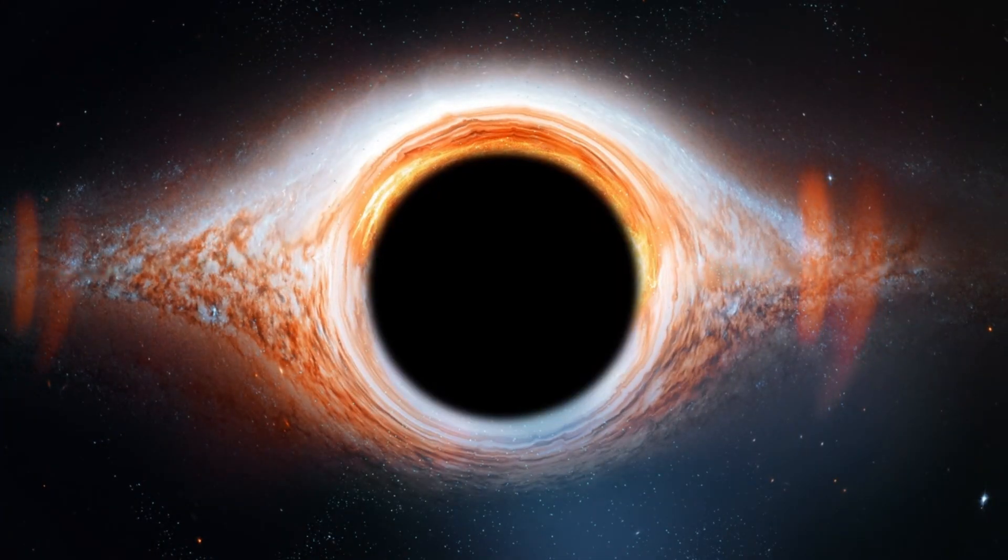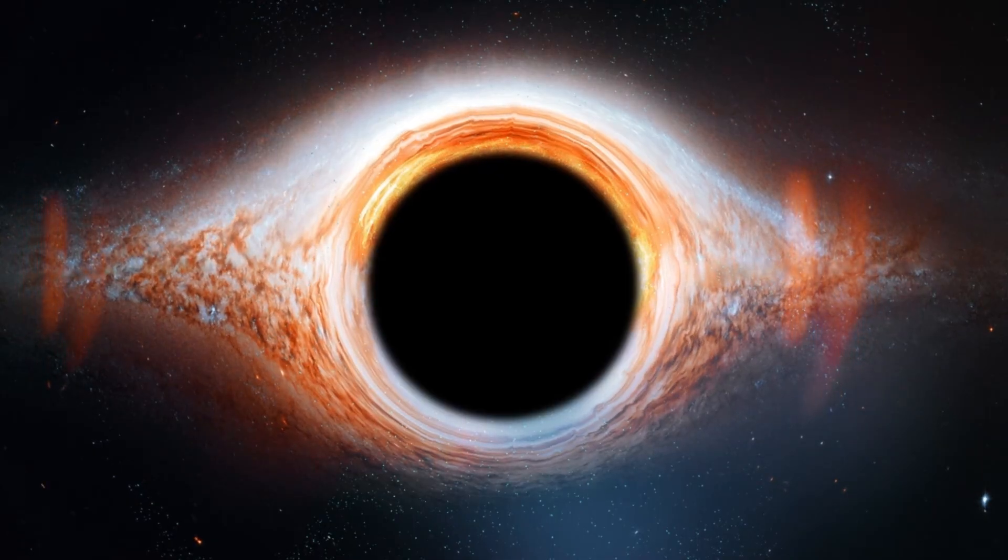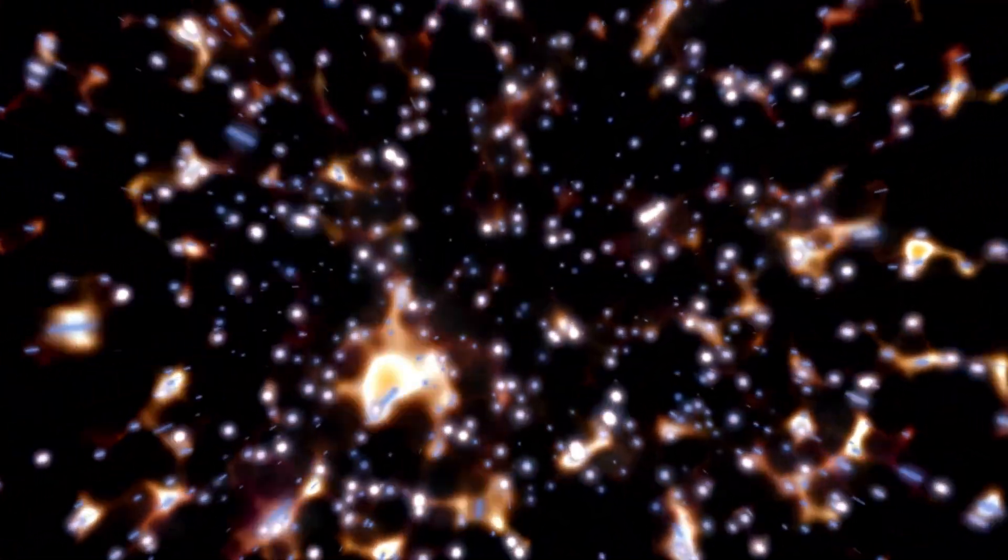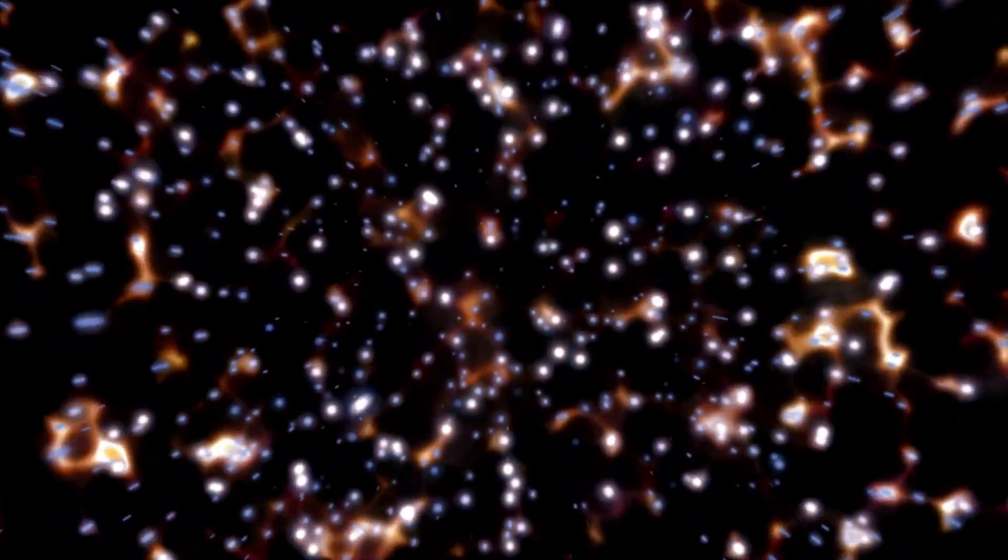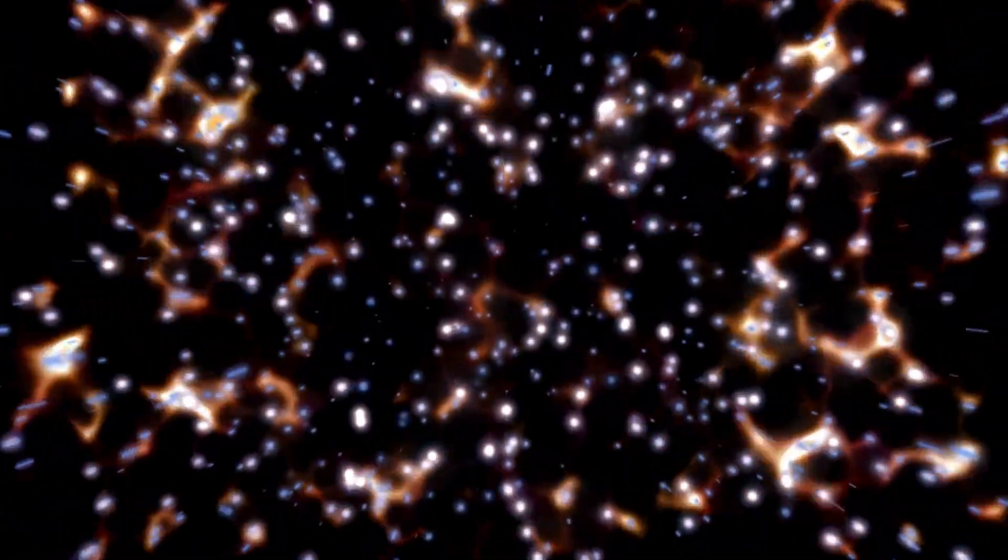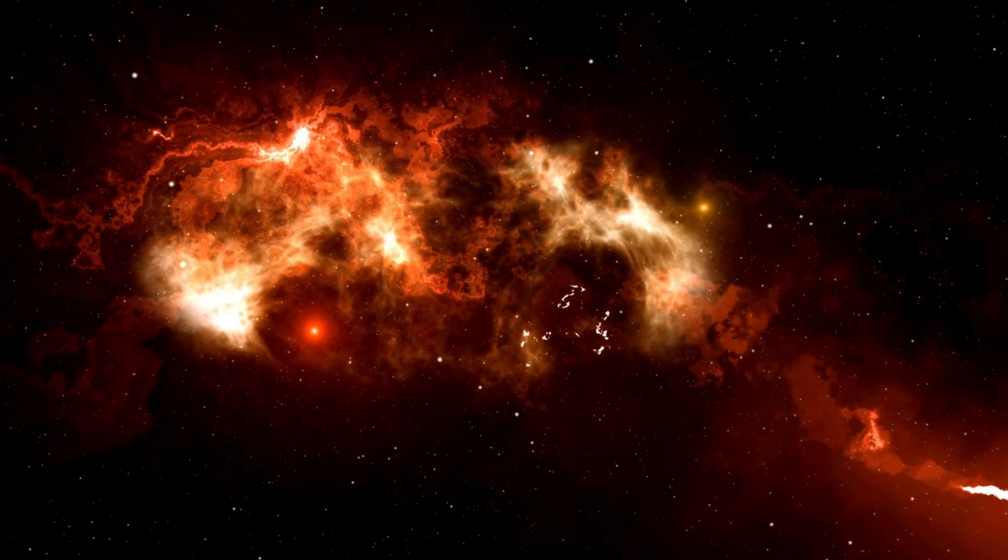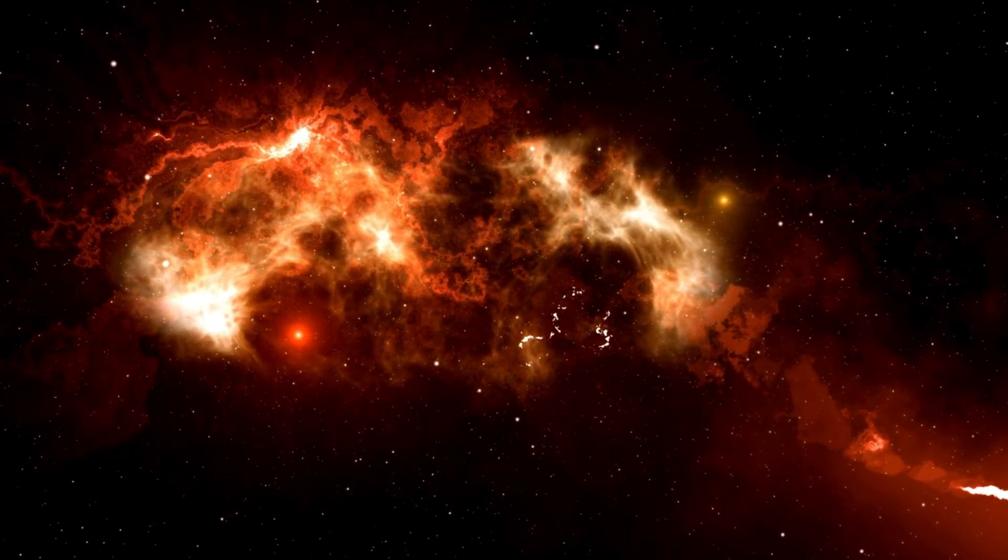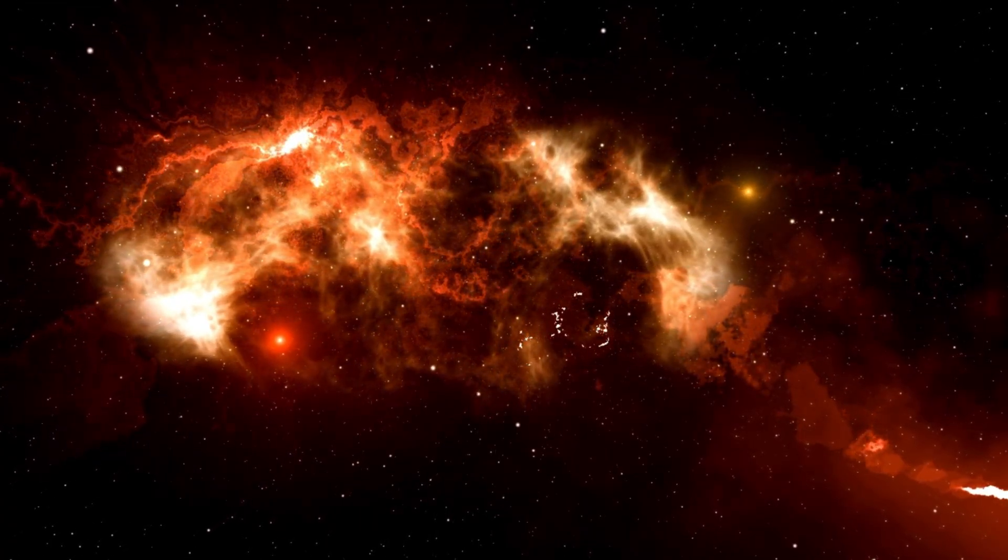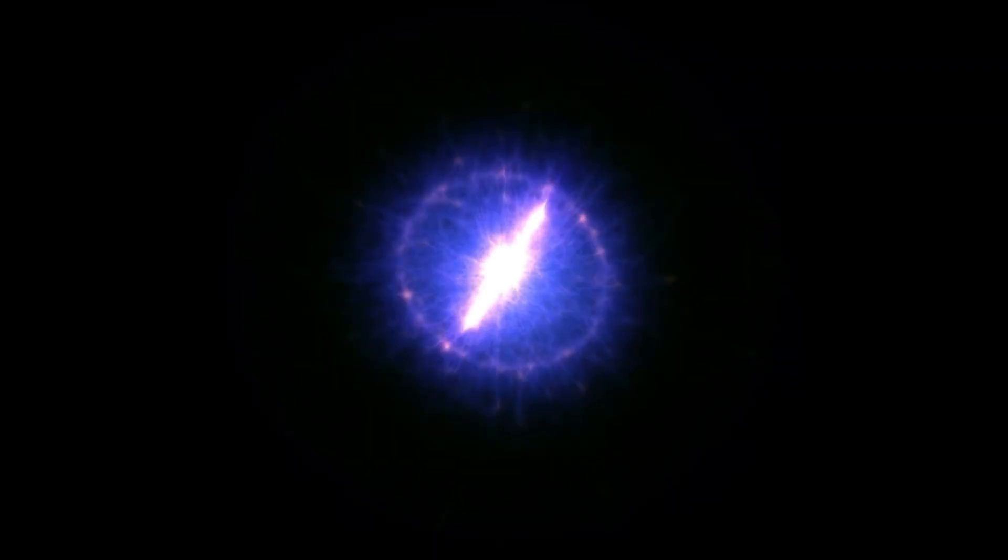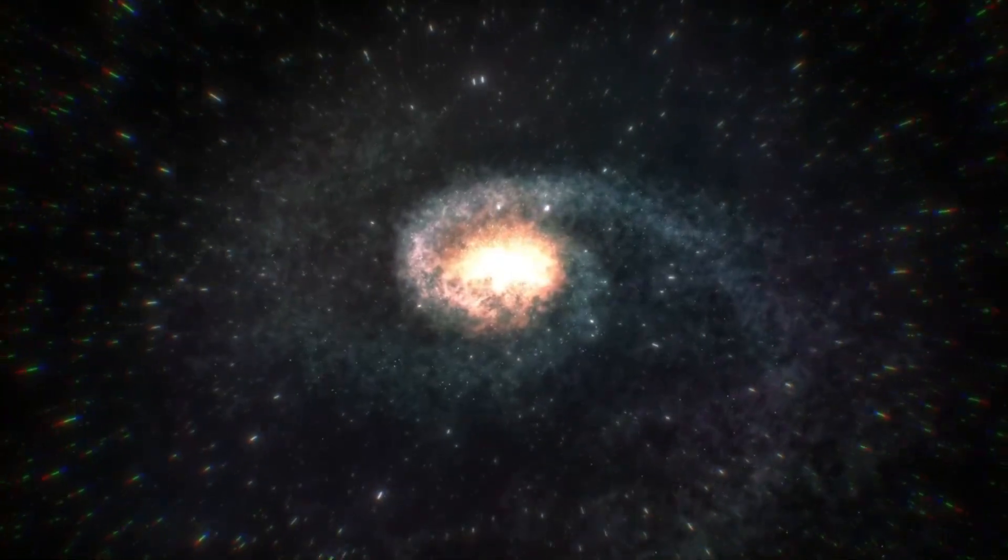In GNZ-11, the ratio of nitrogen to oxygen is four times higher than what we see in the modern universe. That's not just a little odd, it's a cosmic red flag. It suggests that something other than a supermassive black hole might be responsible for the extreme brightness we're seeing. Could it be that GNZ-11 is powered not by a black hole, but by a dense cluster of massive, short-lived stars whose combined winds and supernovae are producing incredible amounts of energy and enriching the surrounding gas in strange ways? Or perhaps we're looking at some entirely new type of object or process that doesn't fit neatly into our existing categories?